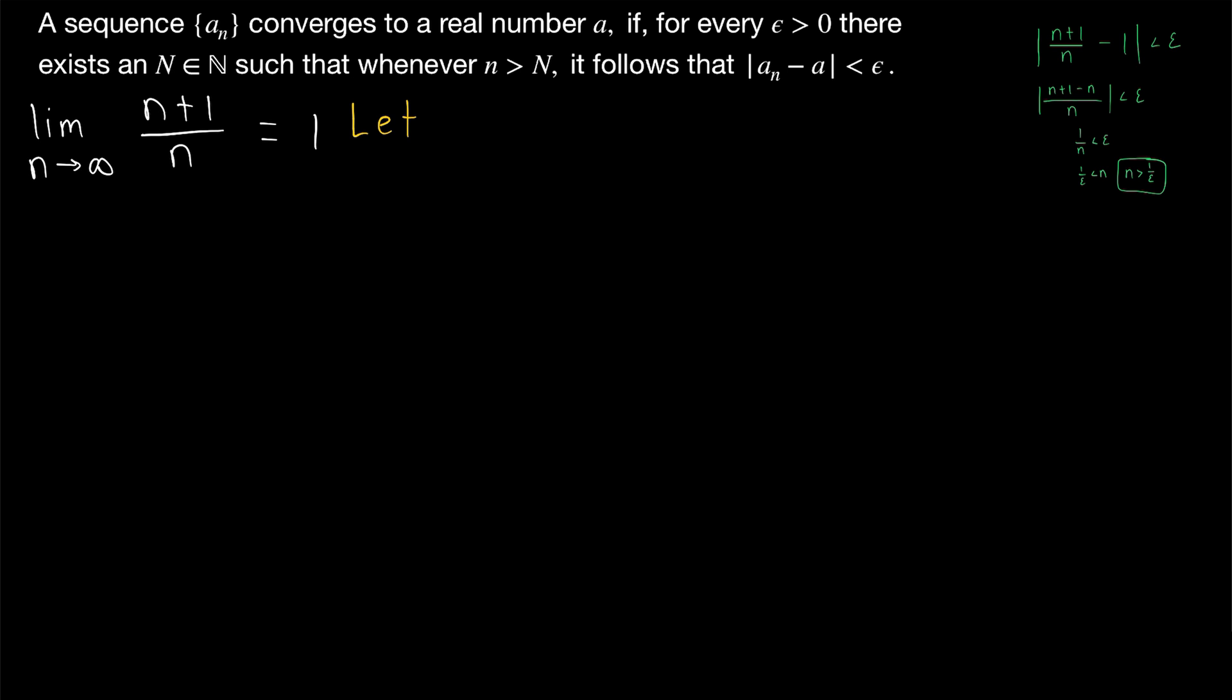As usual, we begin our proof by taking an arbitrary epsilon that's greater than 0. Then remember, we want to consider terms of the sequence where n is greater than 1 over epsilon, but in a convergent sequence proof, just to stick to the conventions of the definition, we don't just take little n to be greater than 1 over epsilon, instead we choose a big N that is sufficiently large. So we'll say choose a natural number big N that's greater than 1 over epsilon, and we know that we can find a natural number this big by the Archimedean principle.